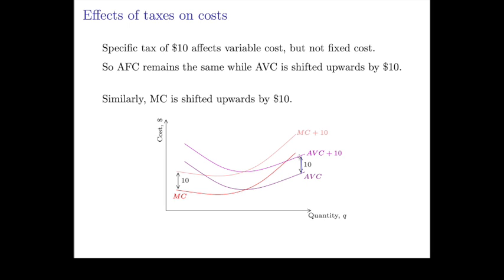So the average variable cost—if now the producer, aside from paying for their costs, also has to pay for every unit that they produce, they also have to pay a tax of $10, then that just gets added to the variable cost and it also gets added to the marginal cost.